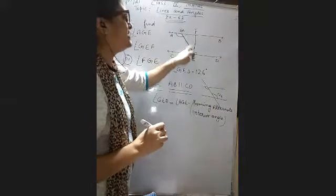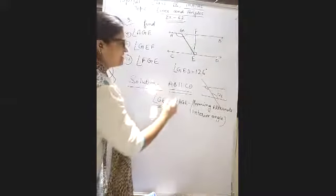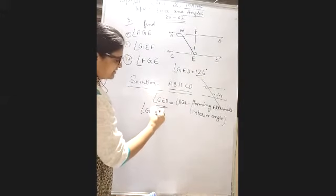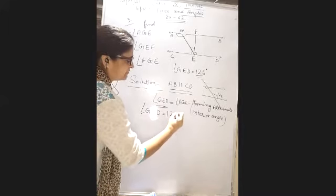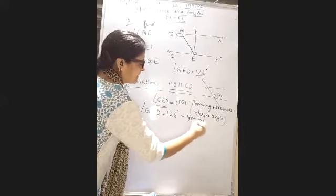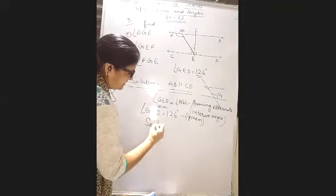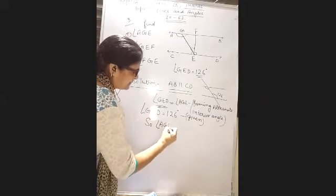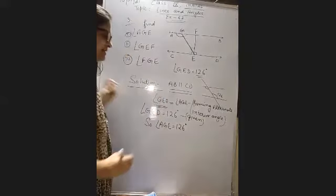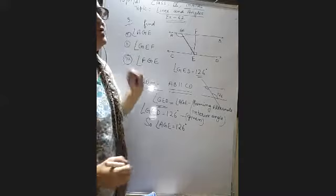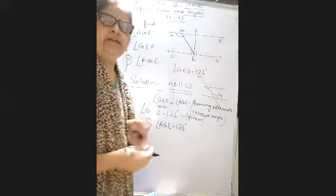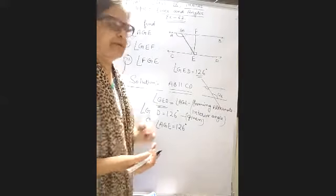So angle GED — which was given — is 126 degrees. Therefore angle AGE is also equal to 126 degrees. That is your first angle found. Now, second, what do you have to find?